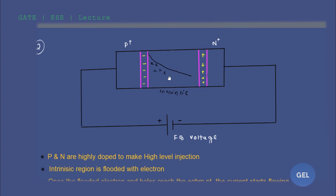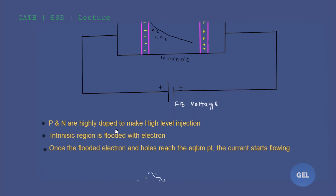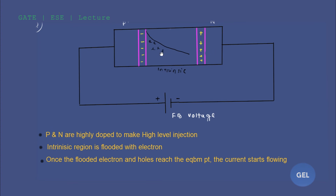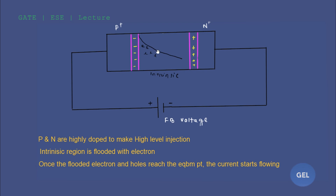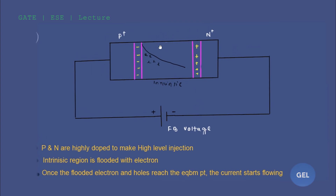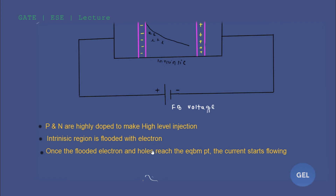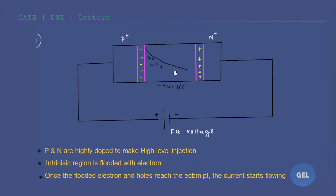The carriers already present in the intrinsic side are very low compared to the minority carriers injected from the p-side. Due to this difference in concentration, an electric field is generated. This electric field creates a flood of electrons and holes from both sides, and once those electrons and holes reach the equilibrium point, current starts flowing.